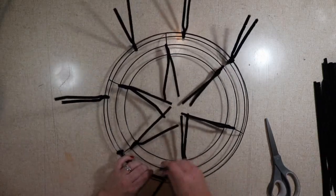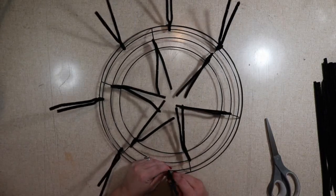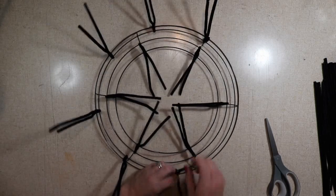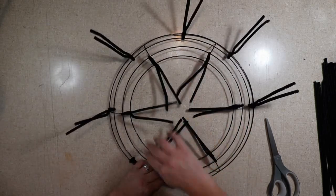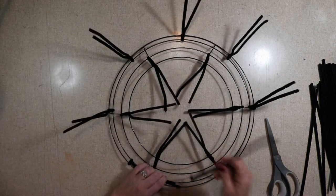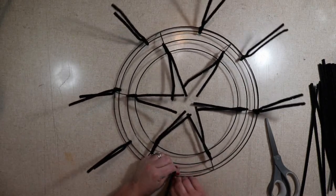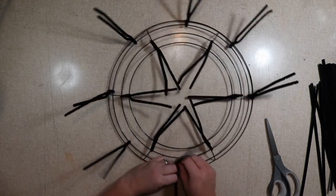I end up with 14 total pipe cleaners. So I have six on the inside, eight on the outside. You can add more or less depending on how you want your wreath to look. I would just make sure they're kind of even so that as you're adding mesh, it's not lopsided or anything.